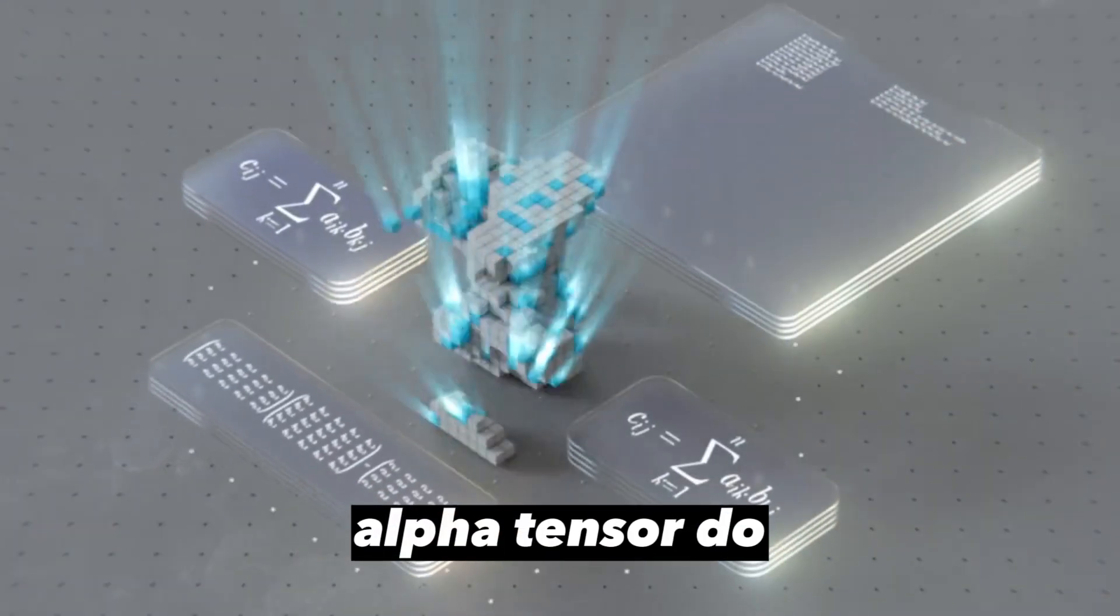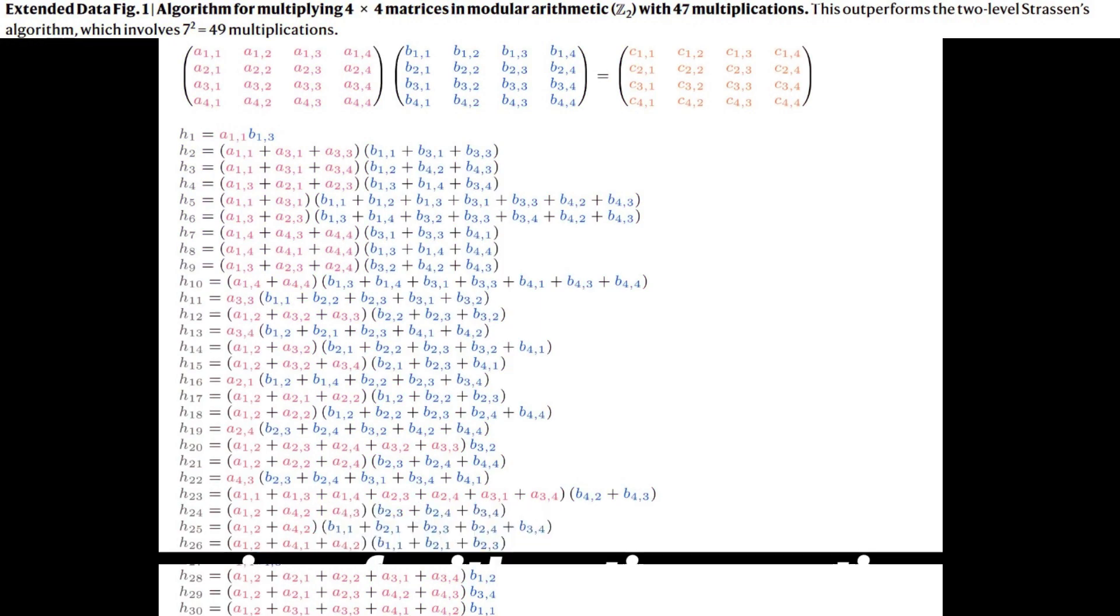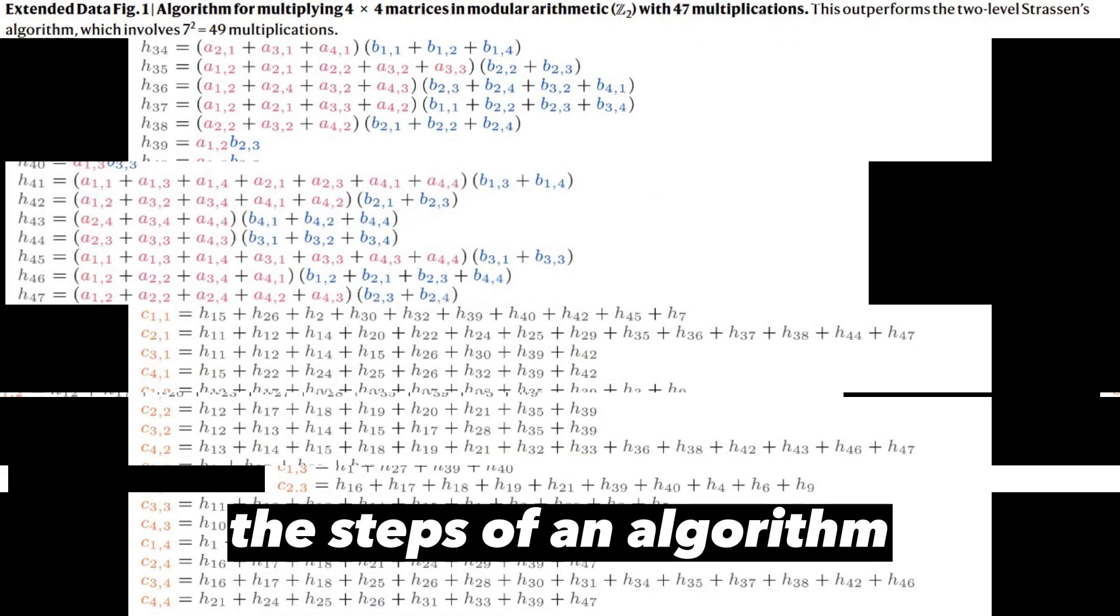What exactly does AlphaTensor do? This is what AlphaTensor produces. We see a series of arithmetic operations, the steps of an algorithm.